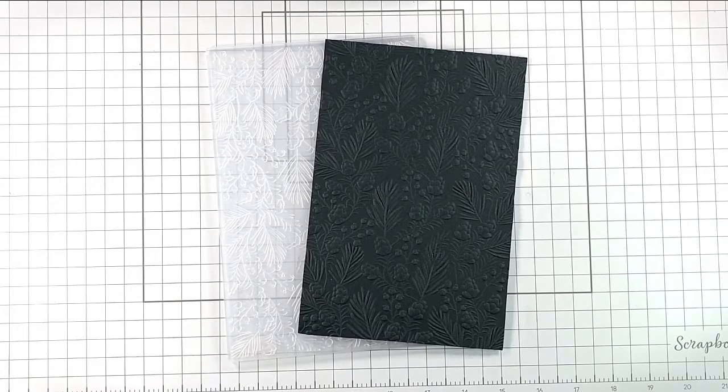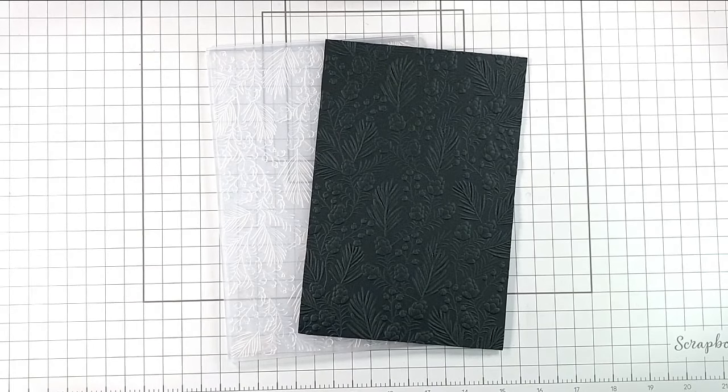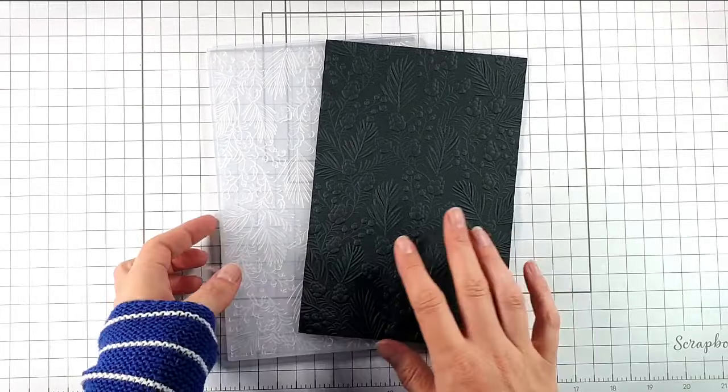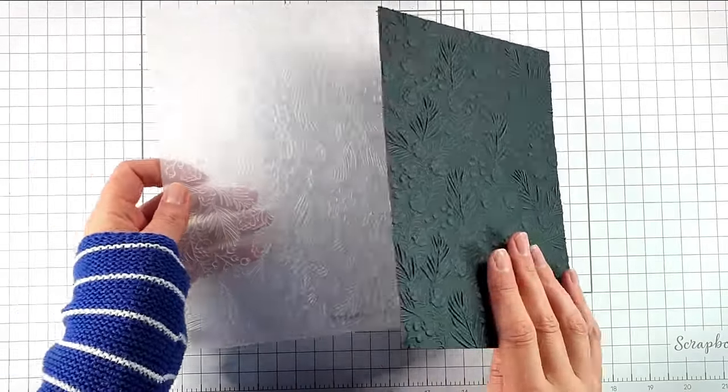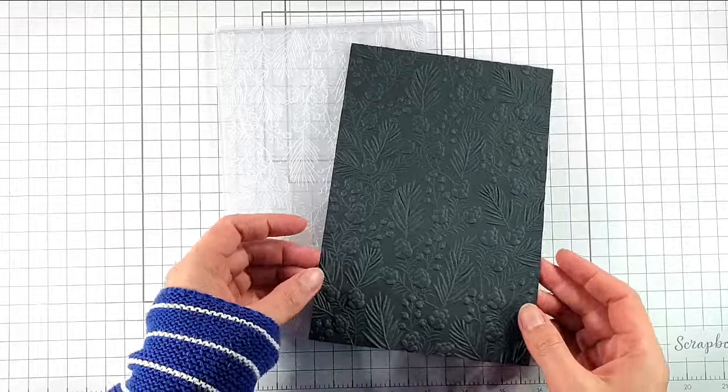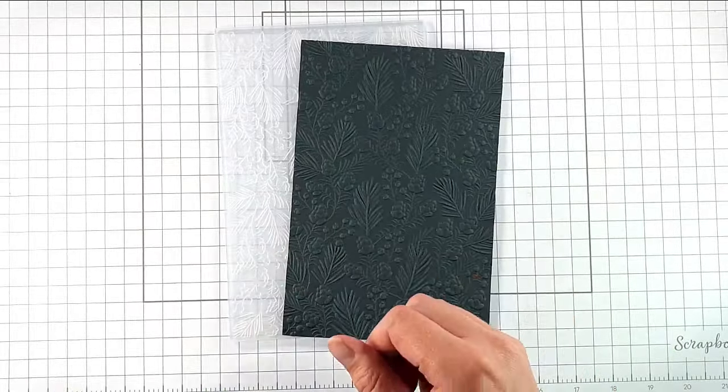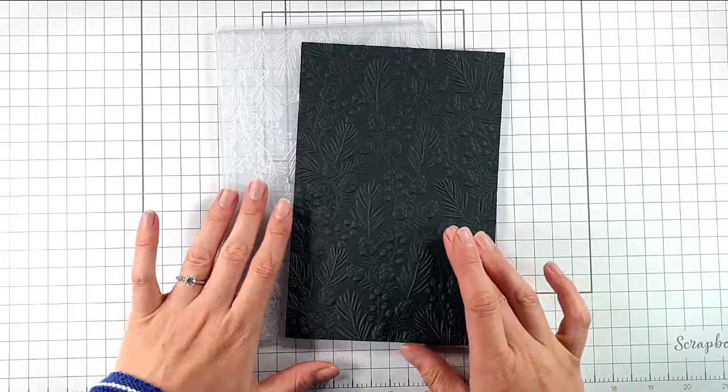So we're going to add some shine to our embossed panel with some gilding wax. We're going to be using the 3D embossing folder of the month from Spellbinders, which is this lovely pine one, and this is going to be the first of my Christmas in July cards.